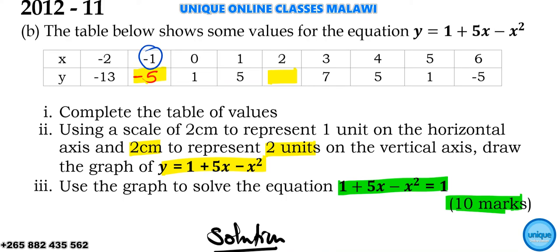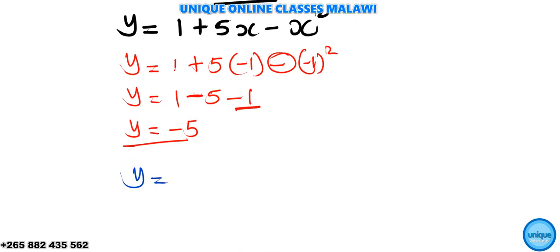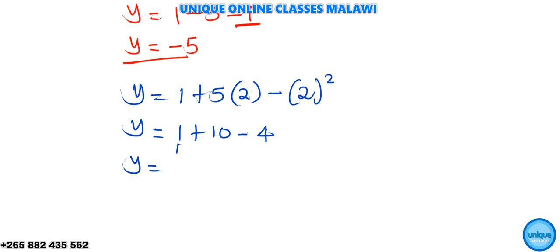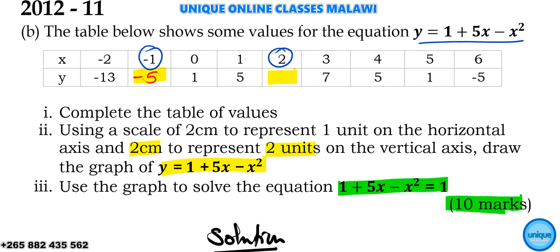The next term — we should find the value of y when x is equal to positive 2. Wherever there is x in this equation, substitute positive 2. So y is equal to 1 plus 5 times positive 2 minus positive 2 squared. Positive 2 times 5 gives positive 10, and positive 2 squared is positive 4. So 1 plus 10 minus 4 gives us 7. The answer is 7.